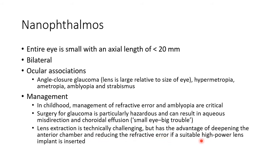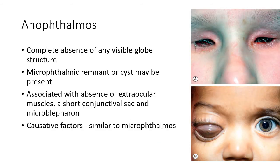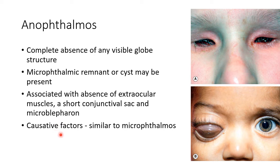Lens extraction is technically challenging in nanophthalmos but has the advantage of deepening the anterior chamber and reducing the refractive error if a suitable high power lens implant is inserted. Now let us discuss about anophthalmos. It refers to complete absence of any visible globe structure. This picture shows bilateral simple anophthalmos. Sometimes there can be a microophthalmic remnant or cyst. This picture shows right anophthalmos with cyst. Anophthalmos can be associated with absence of extraocular muscles, a short conjunctival sac, and microblephoron. The causative factors of anophthalmos are similar to those of microophthalmos.